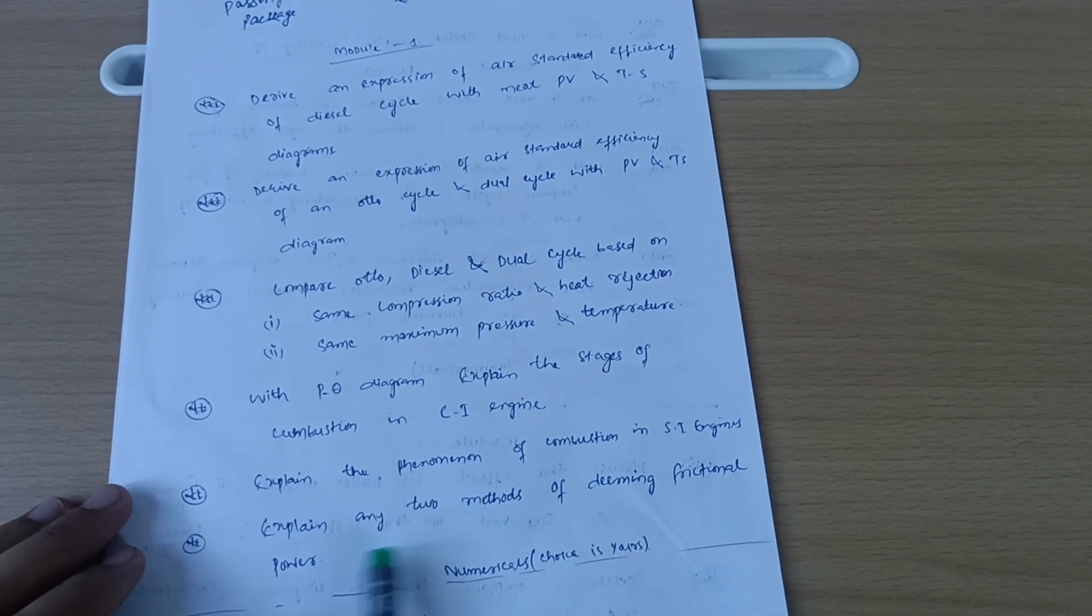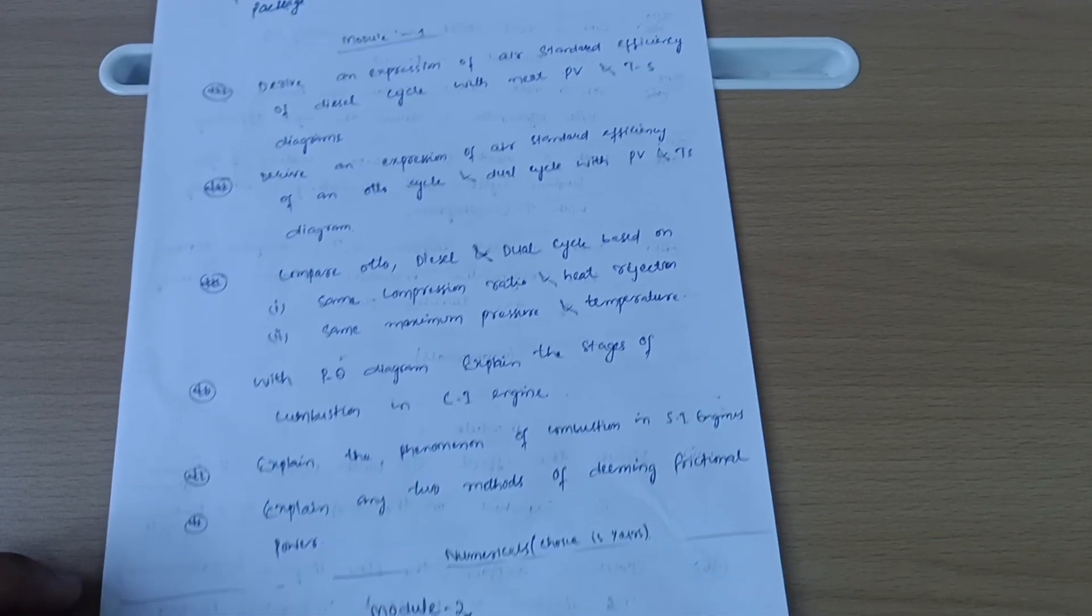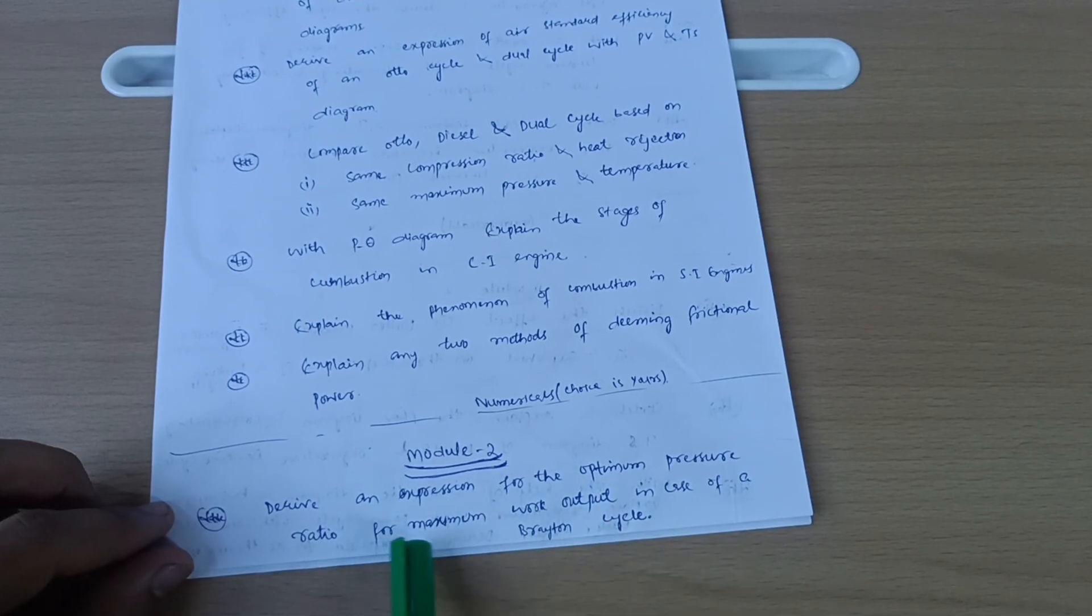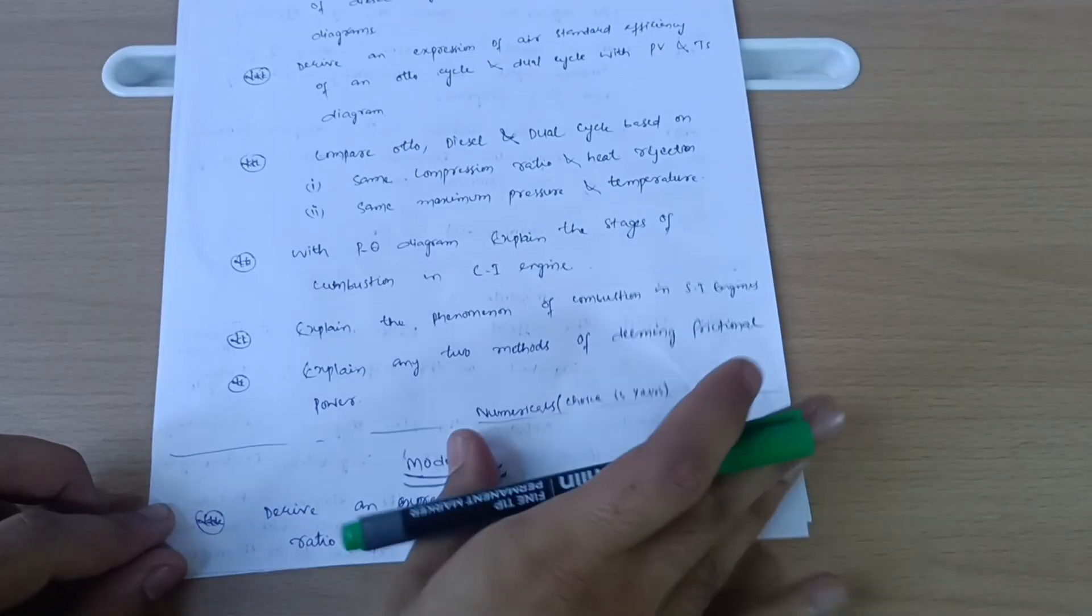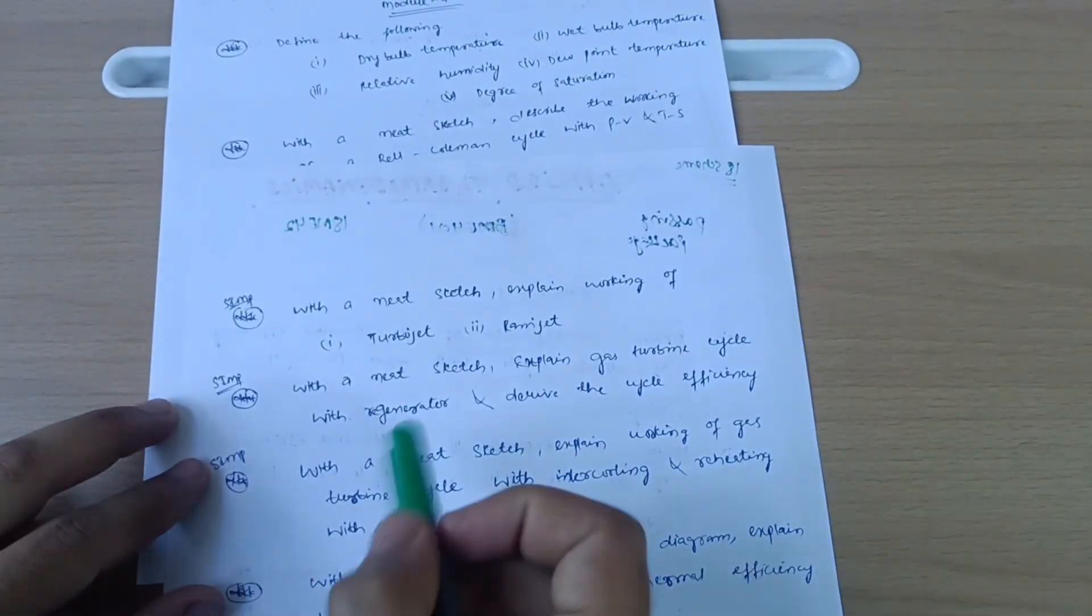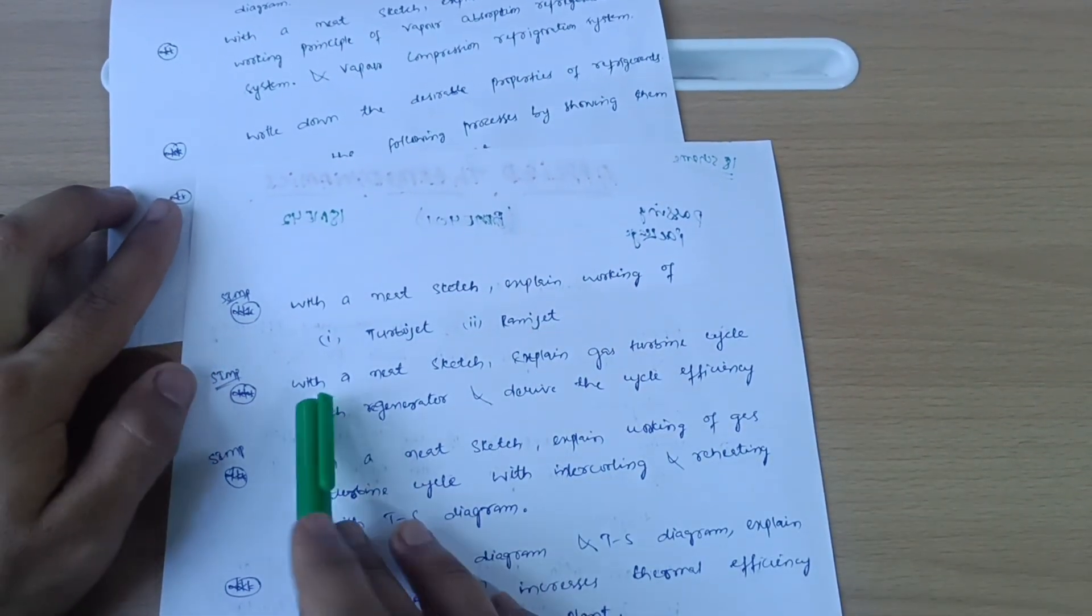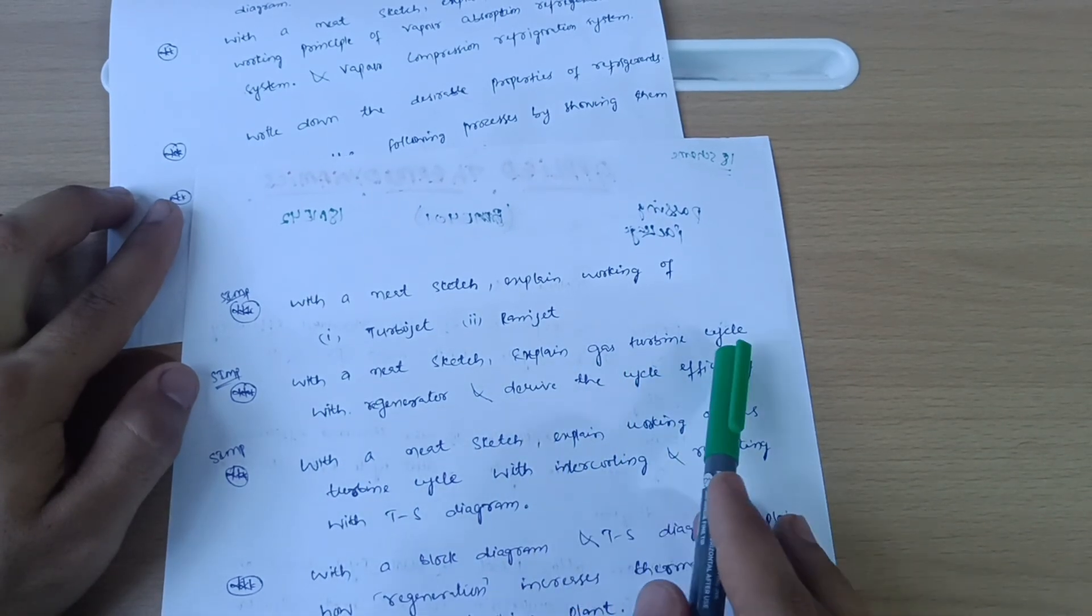Now in Module 2, derive an expression for the optimum pressure ratio for maximum work output in case of a Brayton cycle - super important question. With a neat sketch, explain working of turbojet ramjet. With a neat sketch, explain gas turbine cycle with regenerator and derive the cycle efficiency.